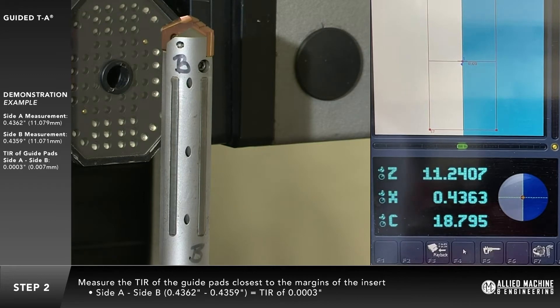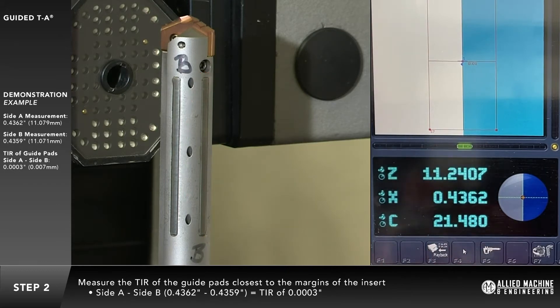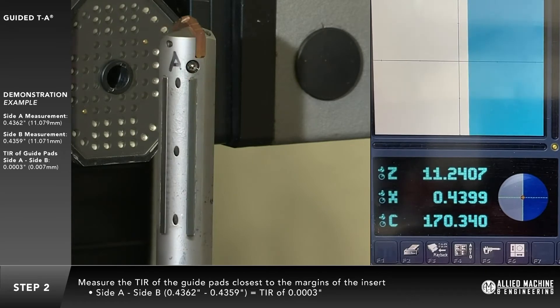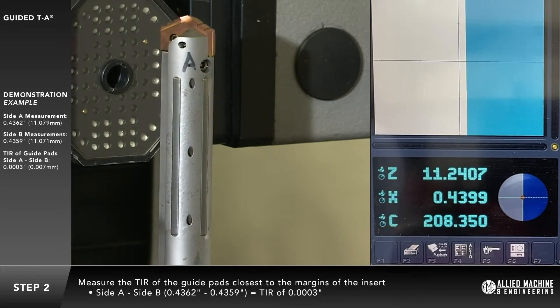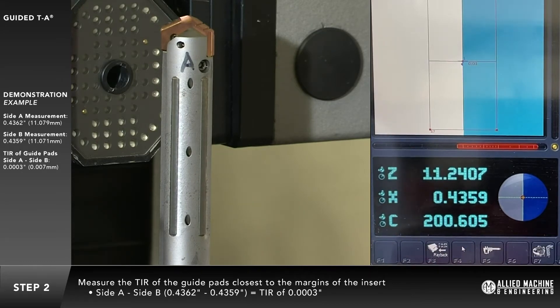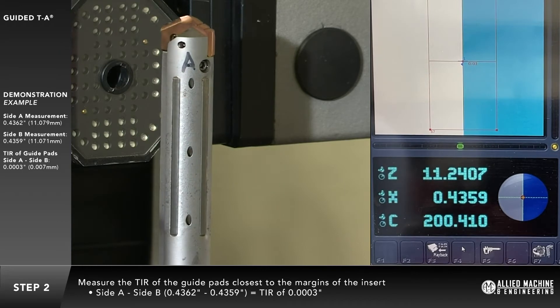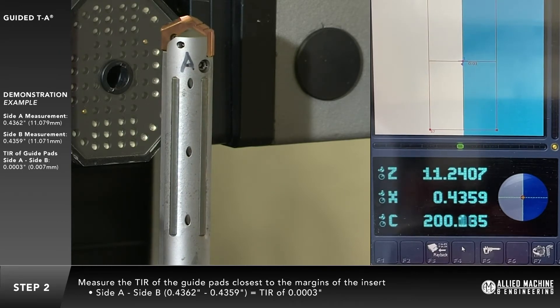Measure the TIR of the guide pads closest to the margins of the insert. In this example, the pre-setter measured 3 ten-thousandths of an inch run-out, in metric 0.007 millimeters.